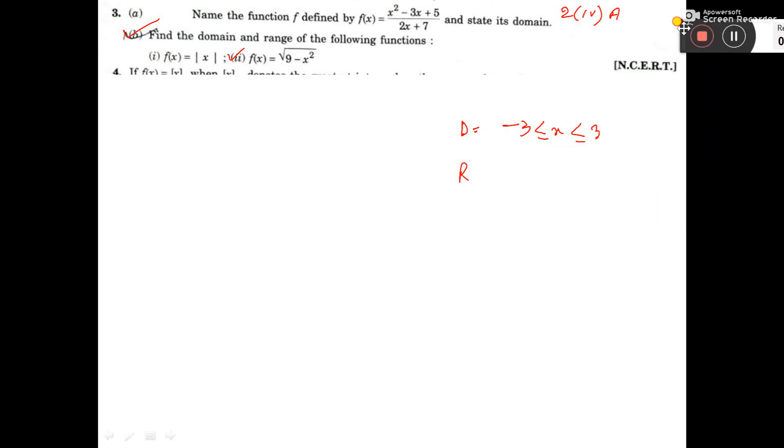So, see here question number 3b. Here f(x) equals within root of 9 minus x square. Now, we know that within root negative number should not come, then it will be complex number.